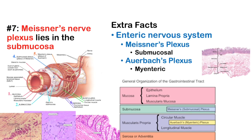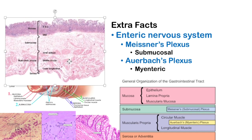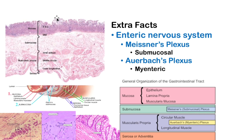Fact 7: Meissner's nerve plexus lies in the submucosa. Going from the lumen outward, the first layer is the mucosa, which has three sublayers: the epithelium (simple cuboidal or columnar, with secretory and absorptive functions), the lamina propria (blood and lymphatics supporting the avascular epithelium), and the muscularis mucosa (a thin smooth muscle layer responsible for contraction and movement of the mucosa).